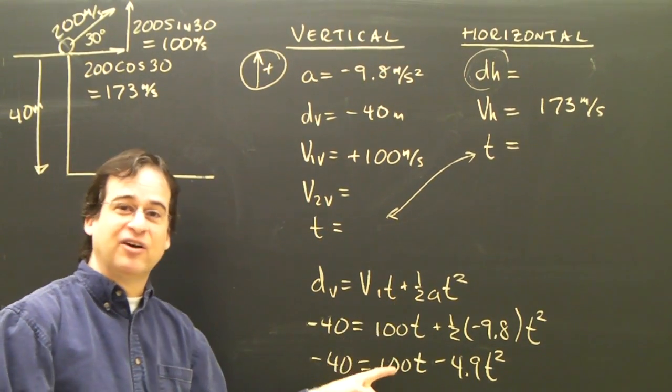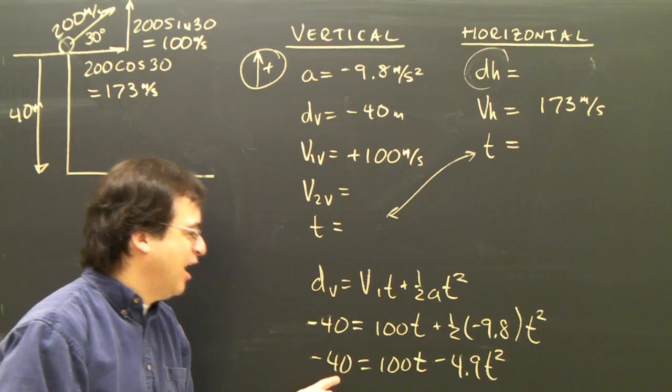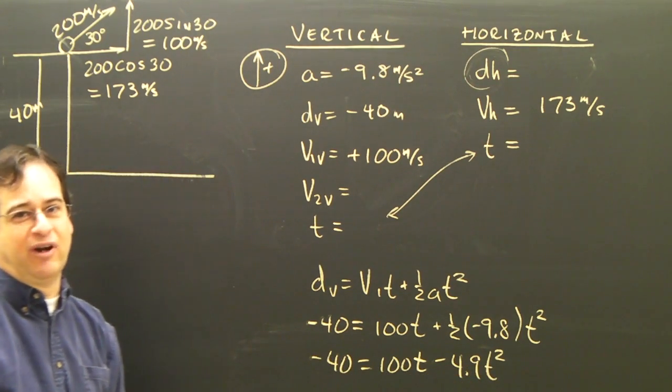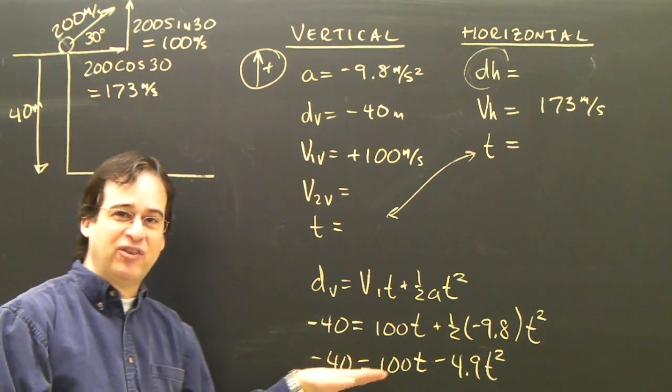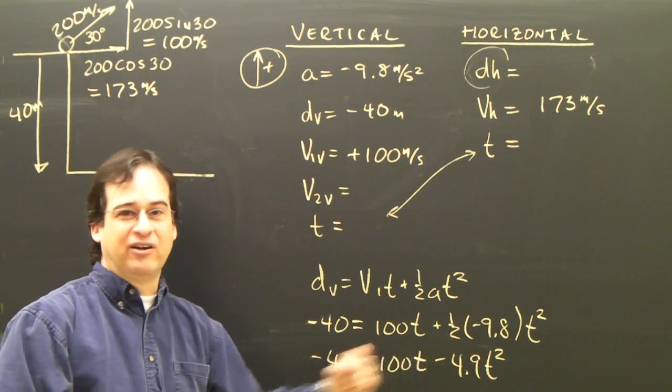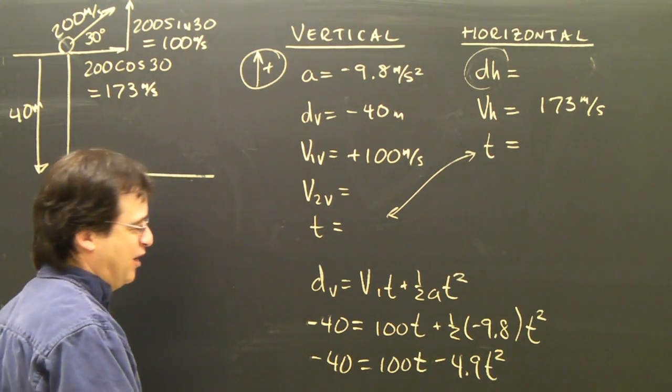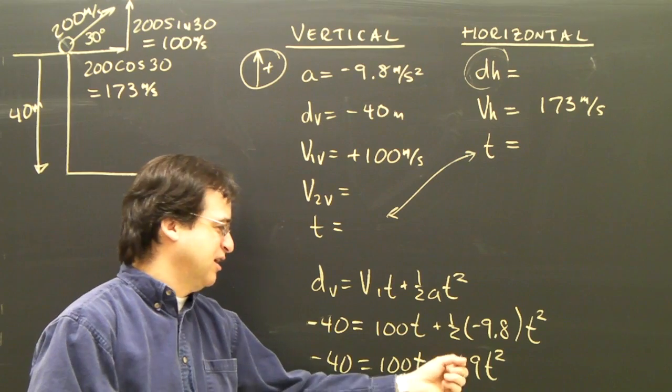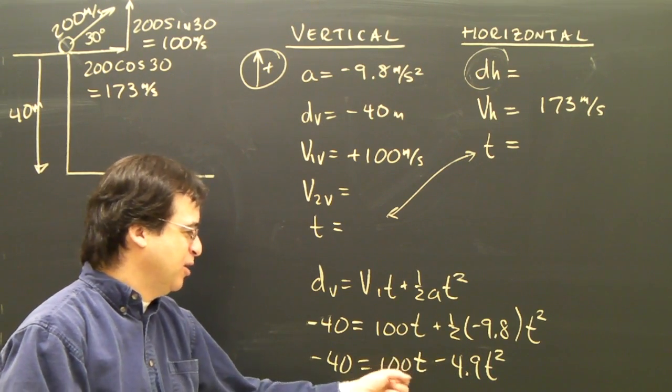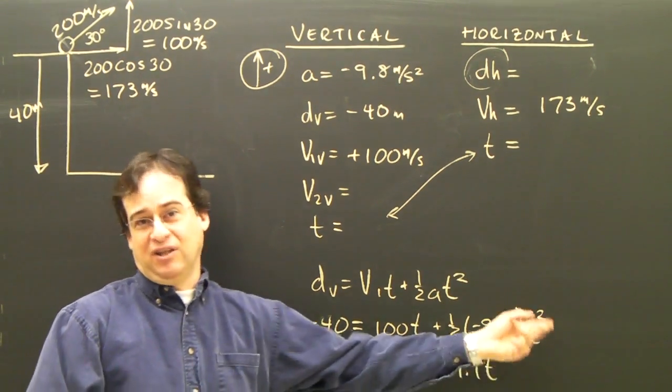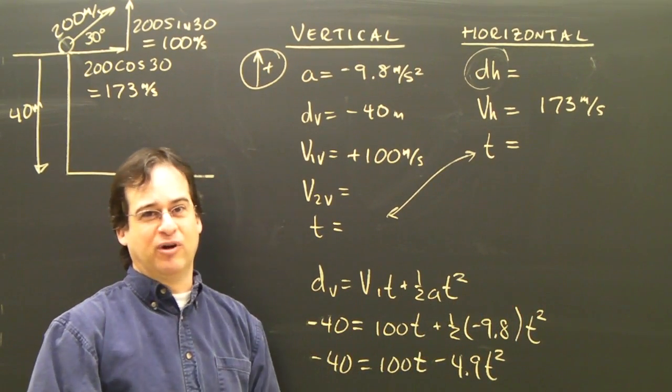Now, since this didn't cancel out, as in part one, I'm going to have to solve for T using the quadratic equation. So I'm not going to cover that here. You can look online how to get the quadratic equation out of that. You have to rearrange it so that it's negative 4.9 T squared plus 100T plus 40 equals zero, and solve with the quadratic.